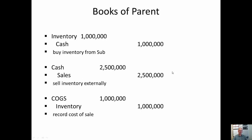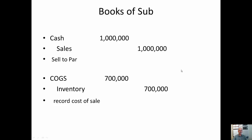These are the books of the parent company — their actual journal entries — debiting inventory and paying for it, selling the merchandise for $2.5 million, and then moving that out of inventory and into cost of goods sold. On the books of the subsidiary, we sell for a million and we move inventory out to cost of goods sold for $700,000.